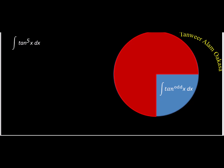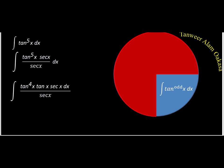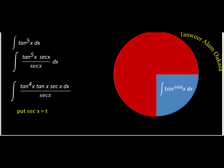For tan to power odd, this is also not difficult. Since the power is odd, I multiply and divide by sec(x). Then if I put sec(x) = t, then sec(x)tan(x)dx becomes dt. So I take one sec(x)tan factor out, and everything becomes a polynomial divided by t, making integration straightforward.